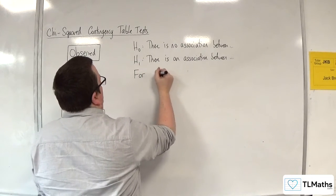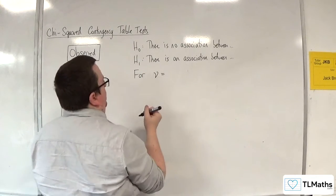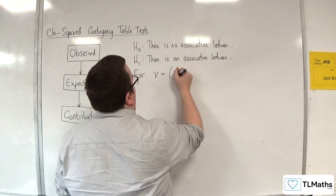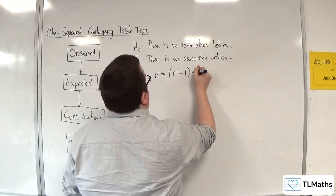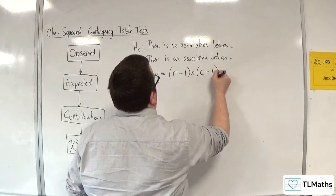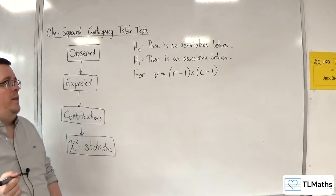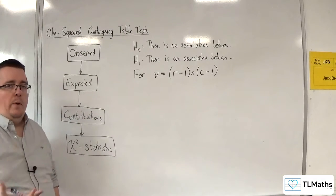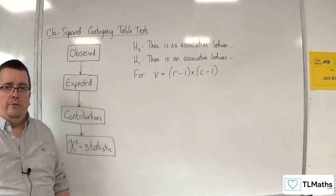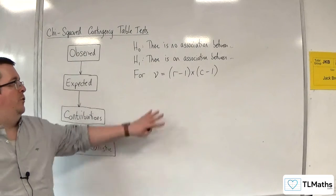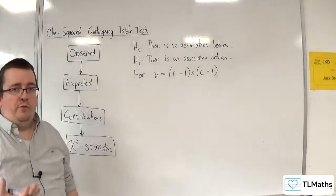So, nu equals the number of rows take away 1, times by the number of columns take away 1. So if it's a 3 by 3 table, for example, then this would be 2 times 2, so nu would be 4.